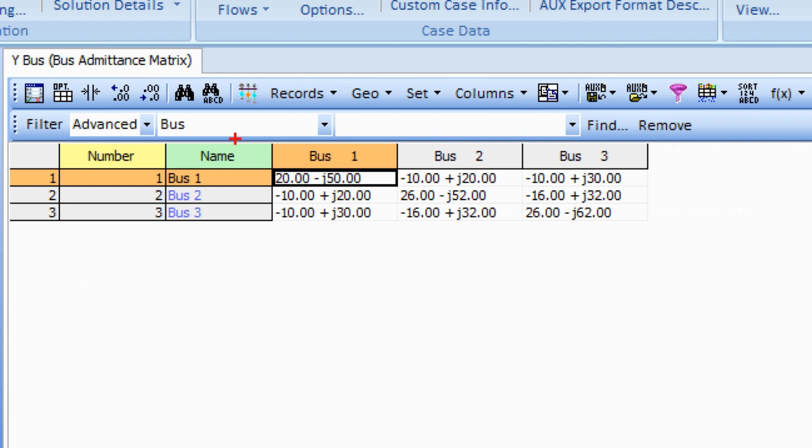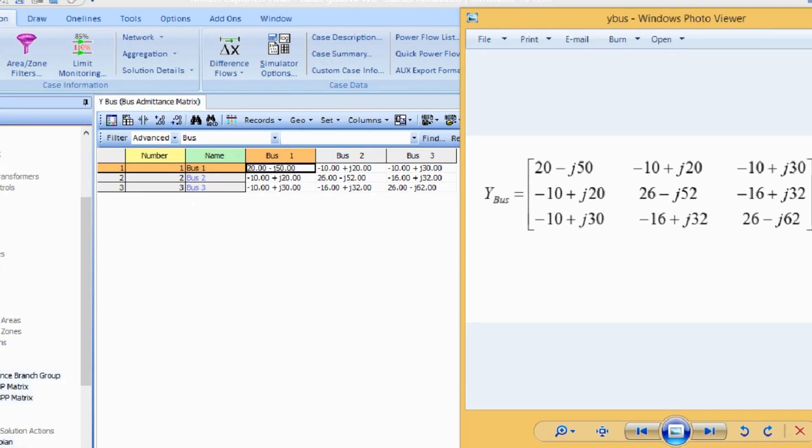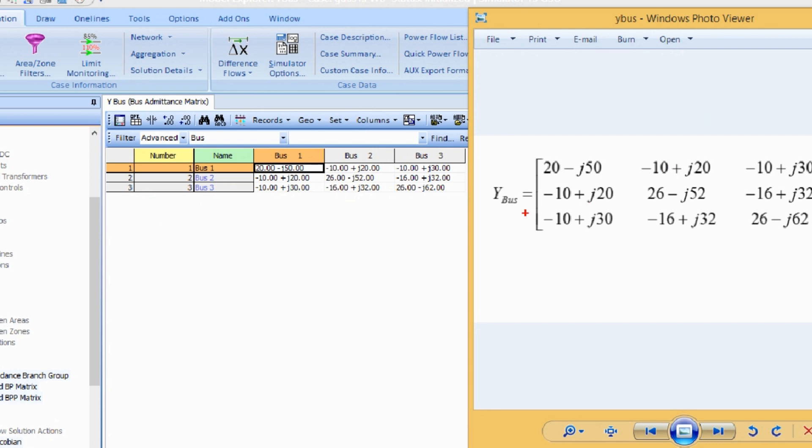You can see here, we can compare the answer of this admittance matrix with the answer given in the book. You can see here that the answer is exactly the same as that of the book.